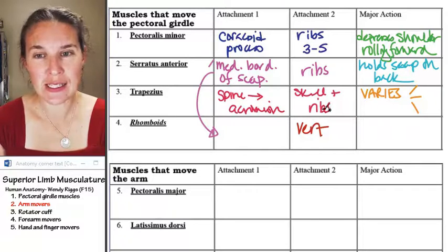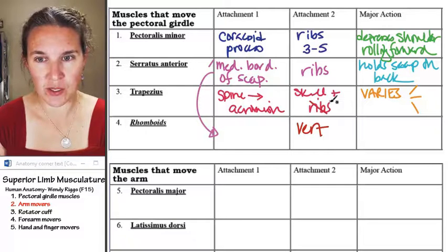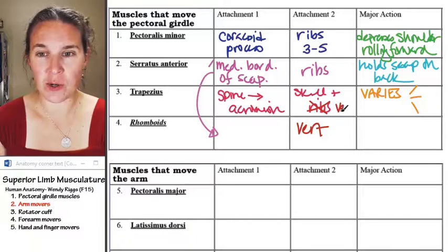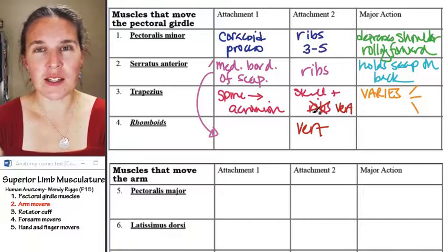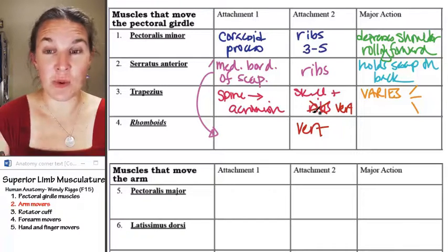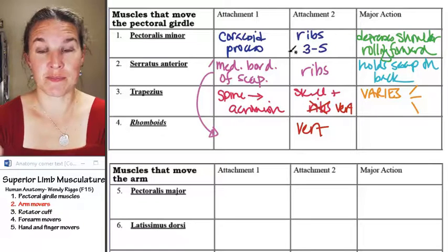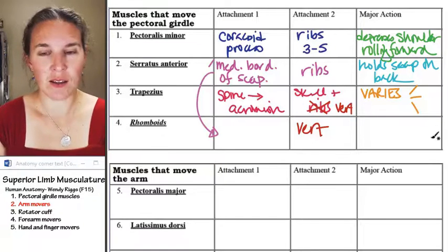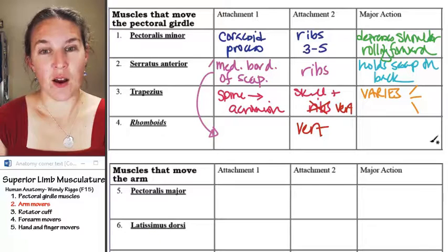Trapezius. Trapezius isn't attaching to ribs. Trapezius is attaching to vertebrae. My question is, did I say ribs, or did I say vertebrae and write ribs? And were you freaking out when I did it? I'm very sorry for that.